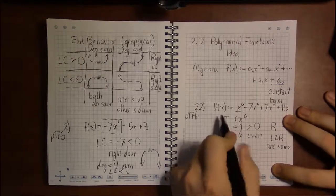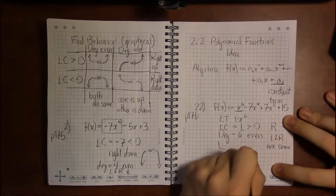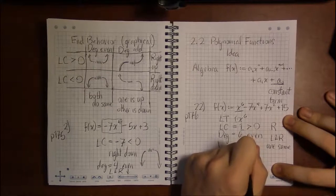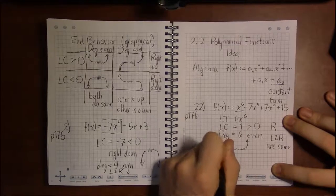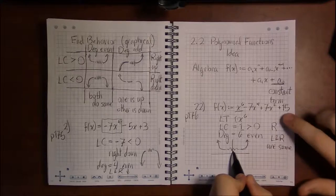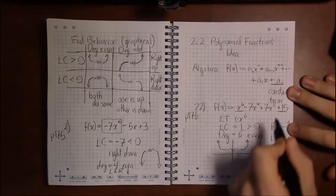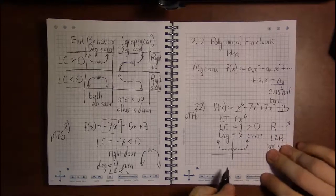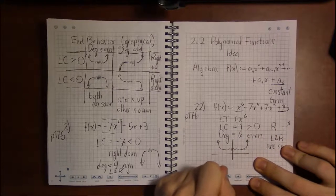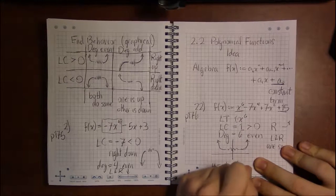So we know our graph for f(x) is going to look something like this, but then we can also tell where it's going to hit the y-axis based on the constant term, because if you just remember what a y-intercept is, a y-intercept is where you set x equal to 0 and find the y value for that x.